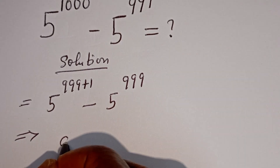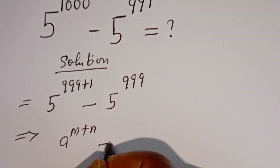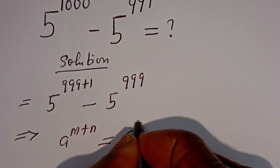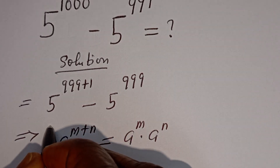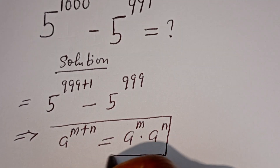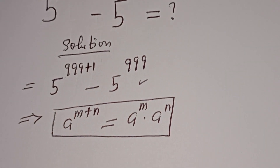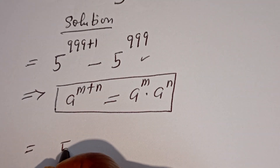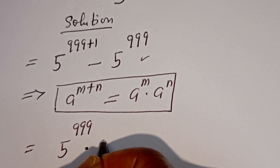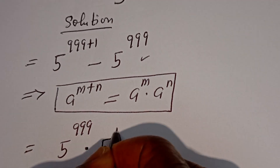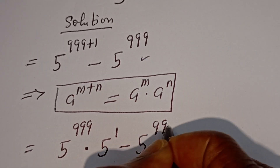Take note that if you have a to the power of m plus n, this is equal to a to the power of m multiplied by a to the power of n. Then from here we have 5 to the power of 999 multiplied by 5 to the power of 1, minus 5 to the power of 999.